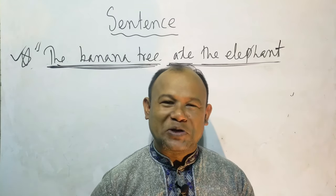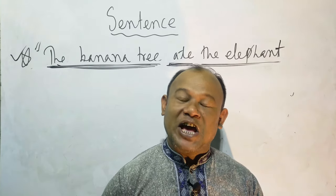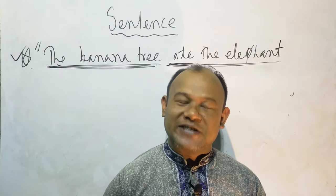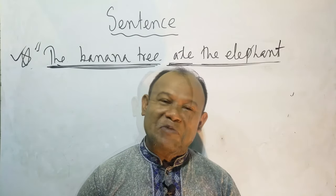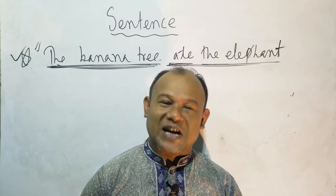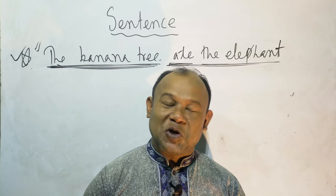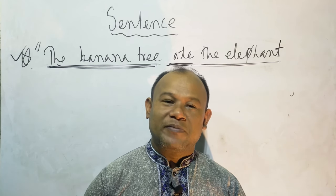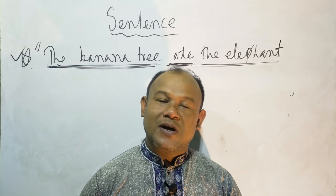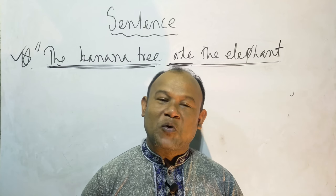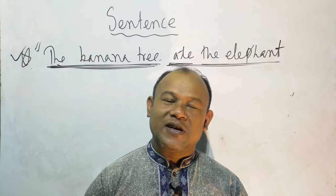Dear learners, I have a question for you. Can we say that when two or more than two words sitting side by side express meaning, the very group of words having a subject and a finite verb is a sentence? I hope the answer is in you now. That means following syntax, semantics, and pragmatics, when two or more than two words sitting side by side express meaning, the very group of words is called a sentence.